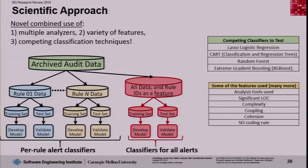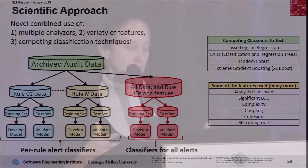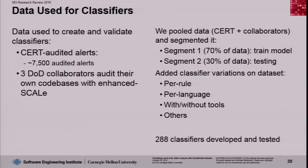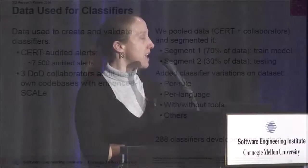Additionally, looking at the right side of the diagram — the red part — we created classifiers for all the alerts. For that, we did not split the data; instead we used it all, and used the rule IDs as features. We did the same training set to develop the model and test set. The data we used includes about 7,500 CERT audited alerts in our archive, and three DOD collaborators auditing their own code bases with enhanced scale. We pulled CERT and collaborator data and segmented it: 70% for training and 30% for testing. We also added classifier variations per rule, per language, with and without tools, and others. In total, we developed and tested 288 classifiers.